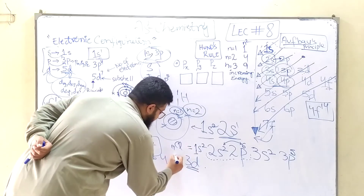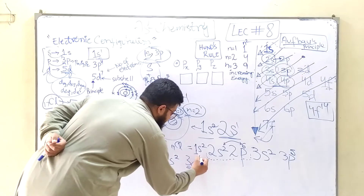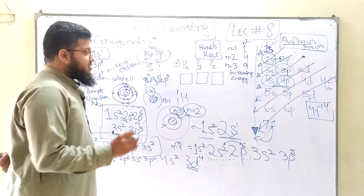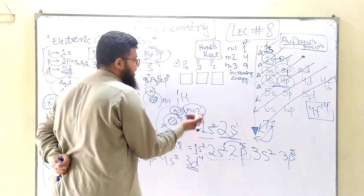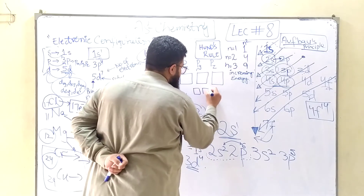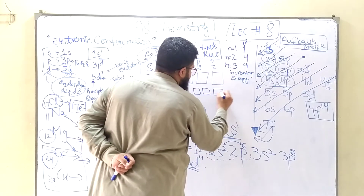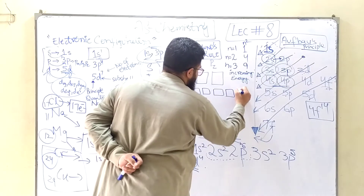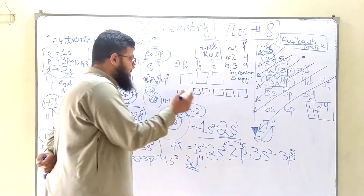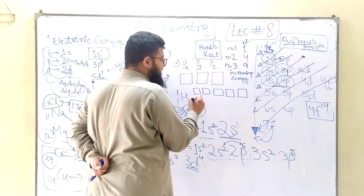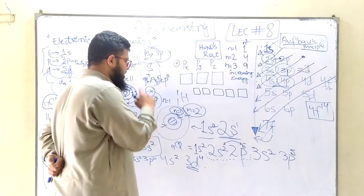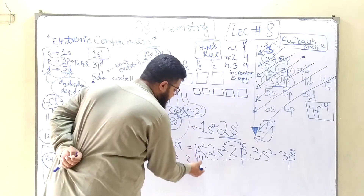The configuration 4s2 and 3d4 is very very unstable. The d subshell contains 5 orbitals — 1, 2, 3, 4, and 5. Each orbital can have a maximum of 2 electrons only. These are the 4 electrons we are working with.